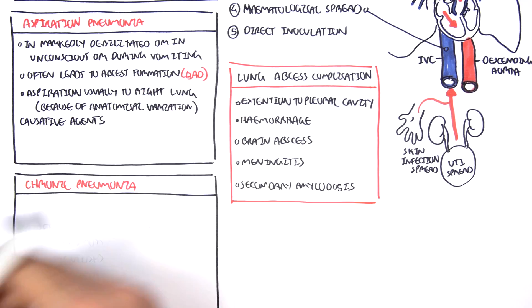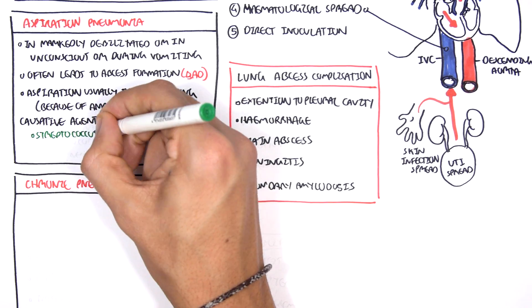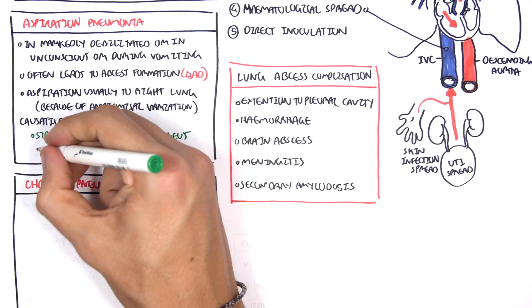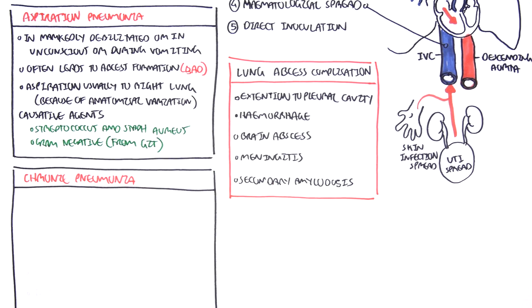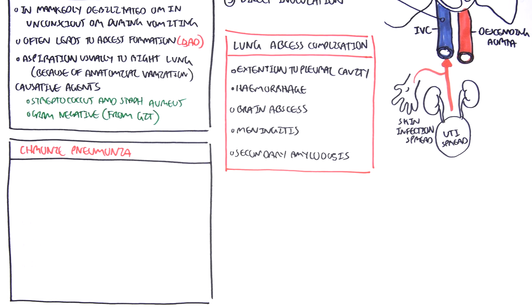Causative agents of aspiration pneumonia include Streptococcus and Staphylococcus aureus, and also gram-negative bacteria from the gastrointestinal tract.